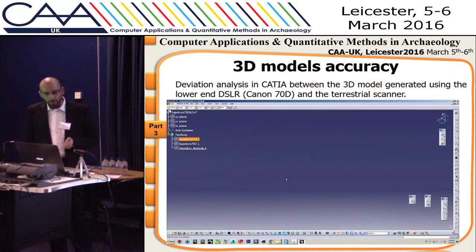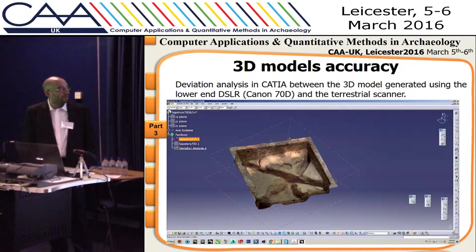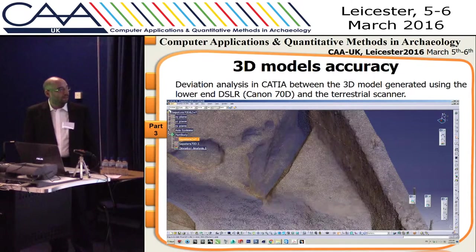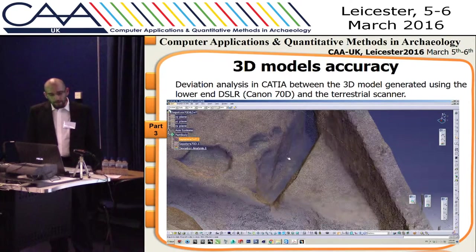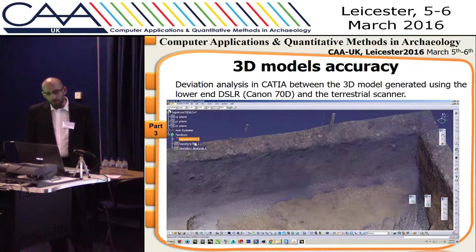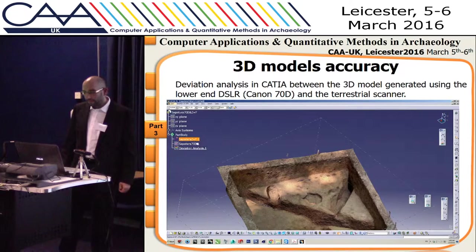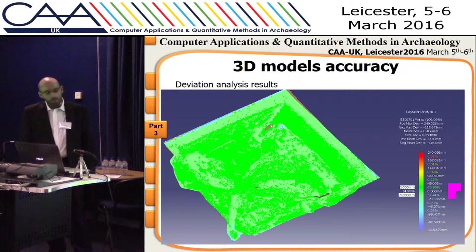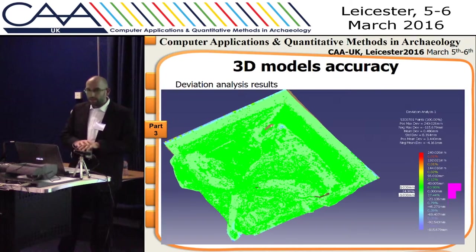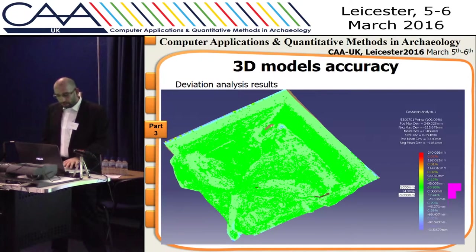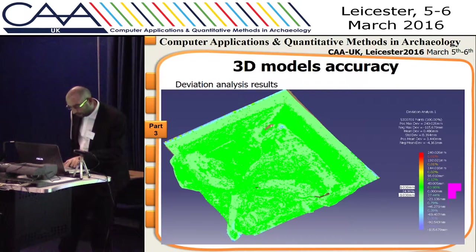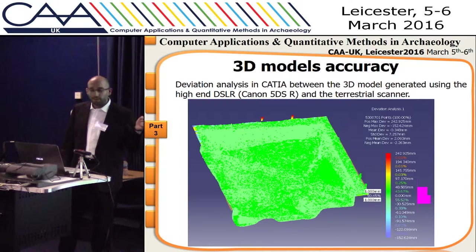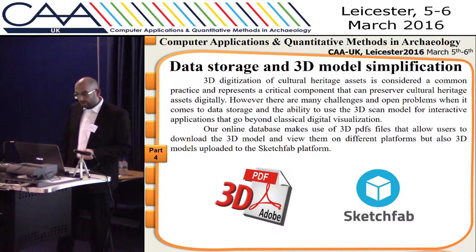For the deviation analysis we used CATIA V5 engineering solution. Here is the terrestrial scan point cloud imported within the application, and on the second layer is the model generated using the Canon 70D camera. The results are shown in a color map. We can see that most of the excavation is in green, meaning quite small deviations — roughly about 4 centimeters for the 70D. For the 5DSR the deviations are even lower.